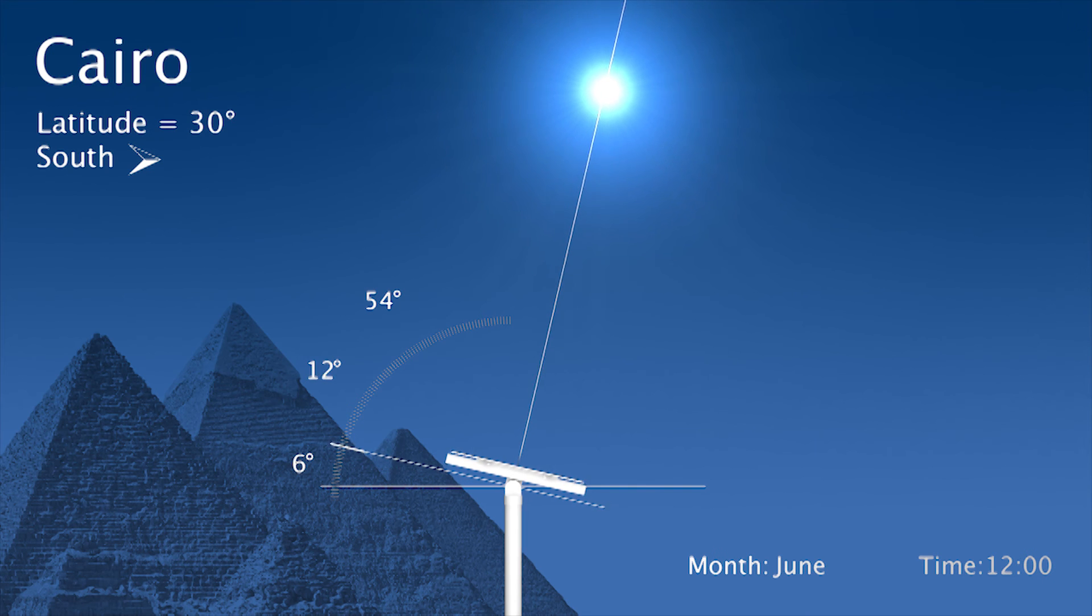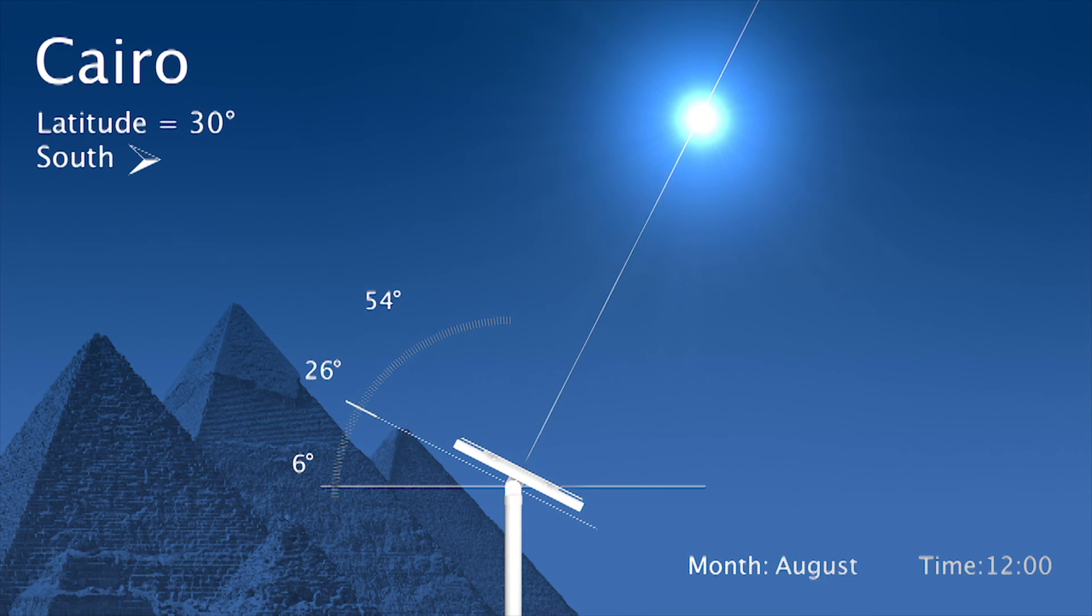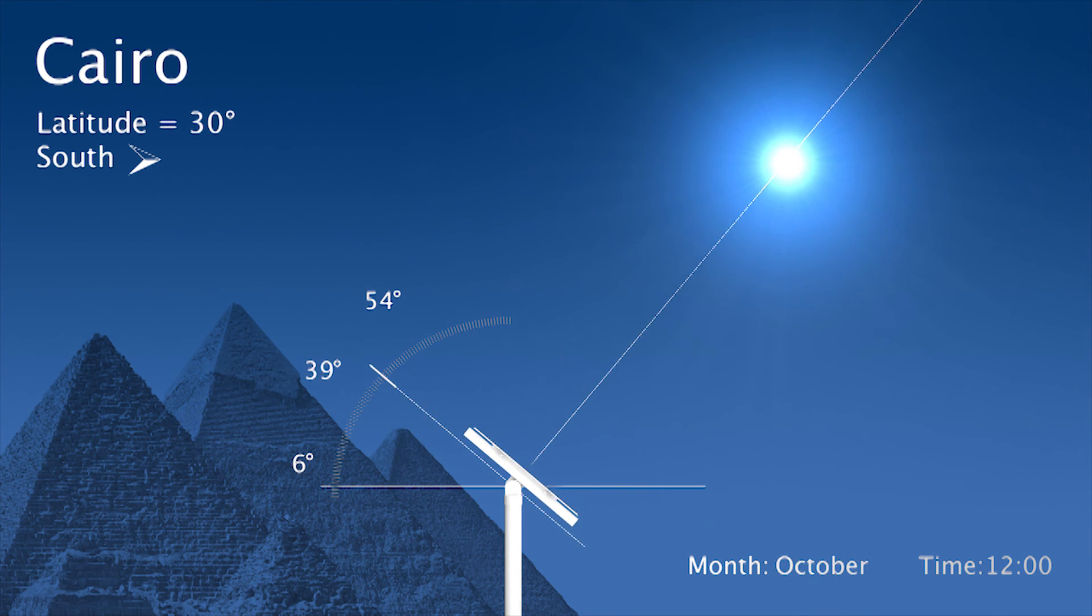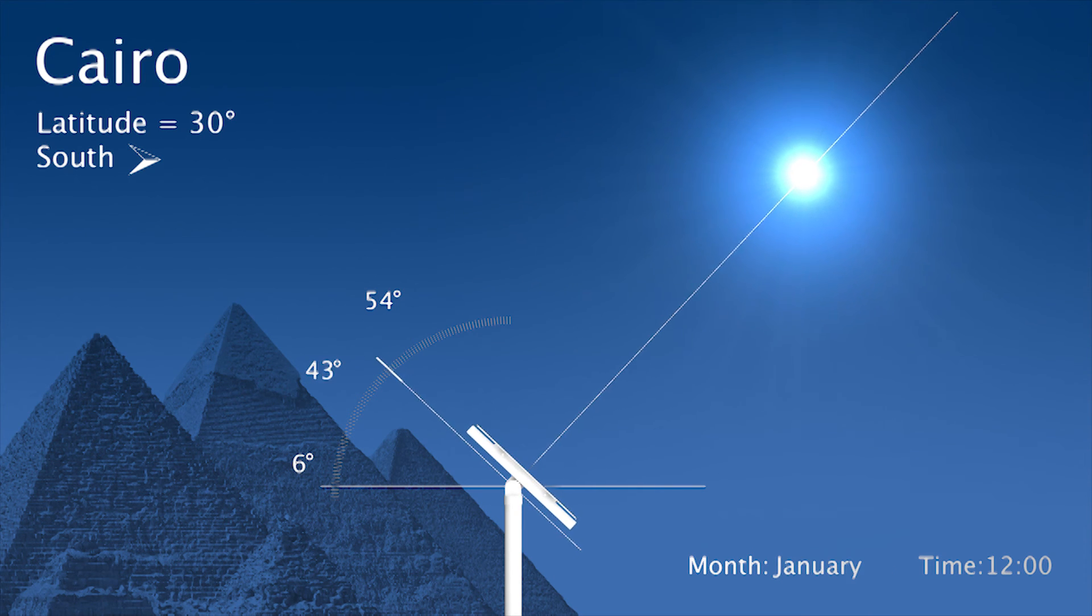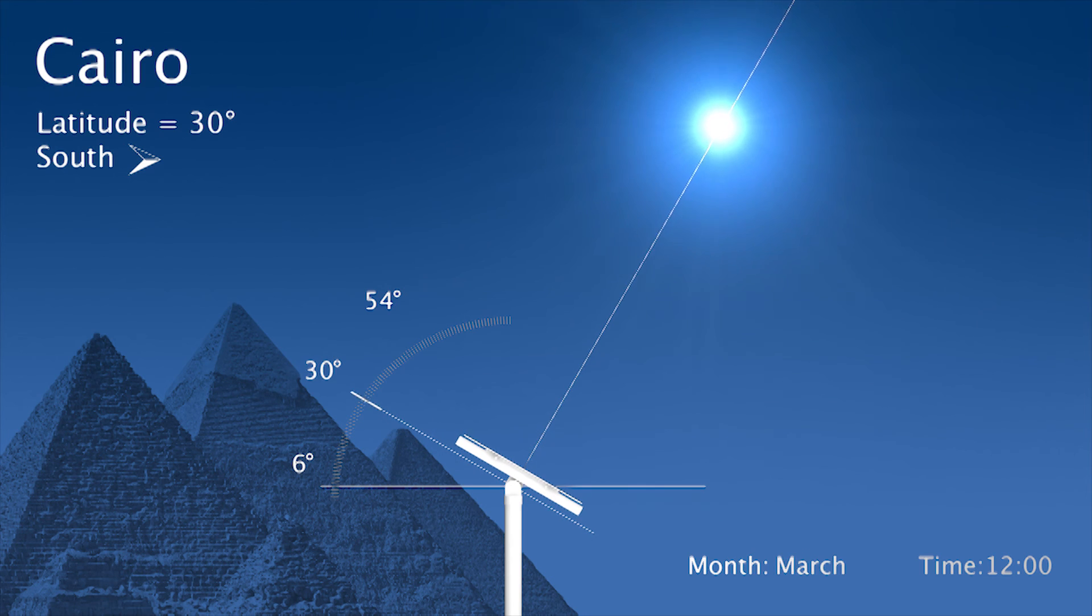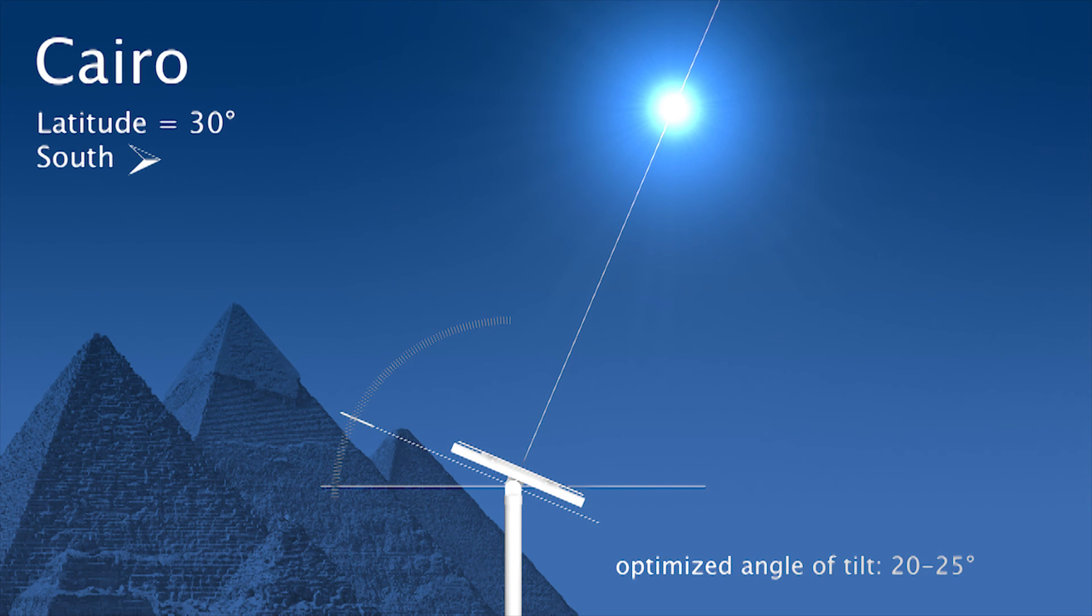Moving closer to the equator, we have Cairo at around 30 degrees latitude. We notice that the range of tilt angles has diminished to around 6 to 54 degrees. The optimized angle of tilt in such a case would be around 20 to 25 degrees facing south.